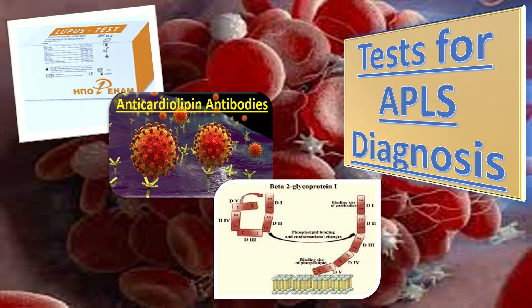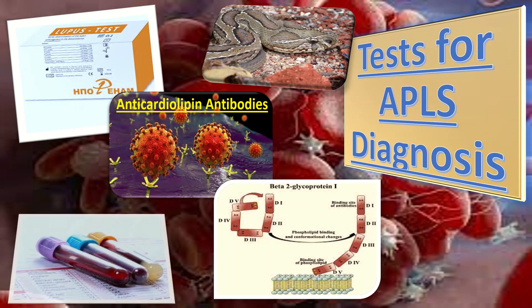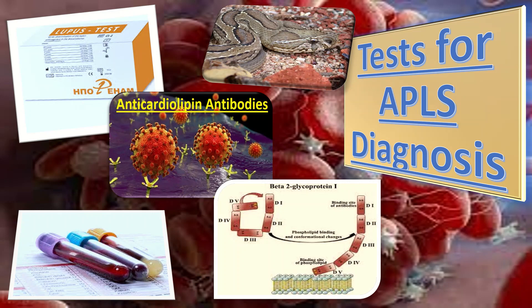In the detection of the lupus anticoagulant, the dilute Russell-viper venom time test is done together with a platelet neutralization procedure. This testing is more sensitive and specific than either the activated partial thromboplastin time test or kaviline clotting time test. APLS antibodies are detected using standardized ELISA testing kit, but it is very important to note that the detection of APLS antibodies is subject to considerable inter-laboratory variations, so we need to correlate our clinical findings along with the laboratory results.